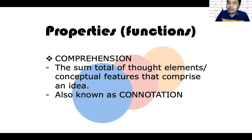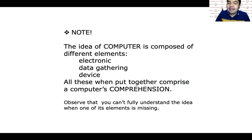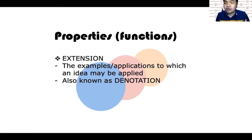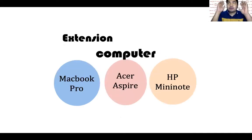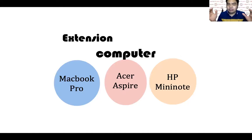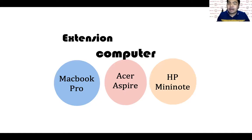The opposite of comprehension is what we call extension. What is extension? Extensions are the examples or applications to which an idea may be applied. It is also known as the denotation. For example, the idea of 'computer' — what are the extensions of a computer? We can say MacBook Pro, Acer Aspire, HP Mini Note. These are examples or the way you apply the word computer.